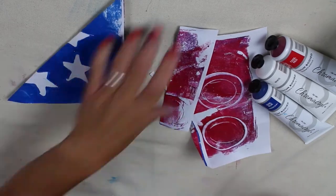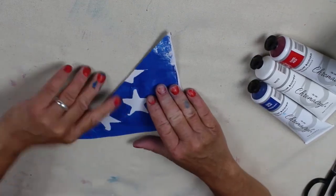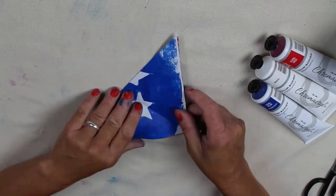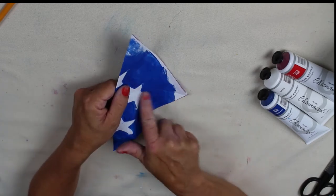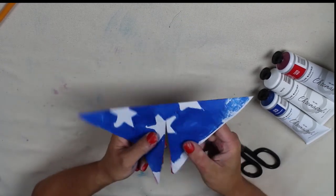Now take that triangle and fold it in half so you get a nice fold line. Cut from the edge along the fold line towards the fold. Leave about a half inch of space. Do not cut the fold.